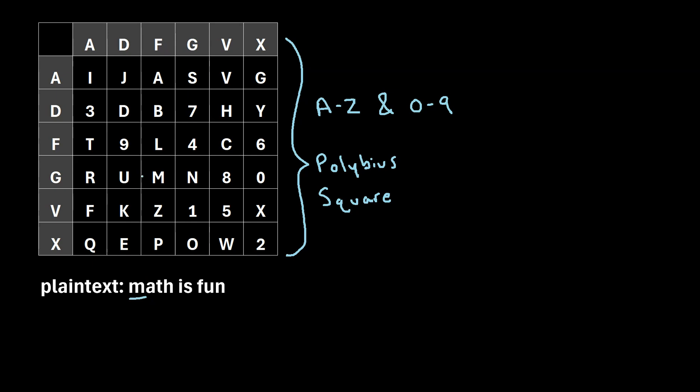M, let's find M inside of this square. So here's M. What we're going to do is rewrite M as the row header and then the column header. So M is going to become GF. So we'll write GF.